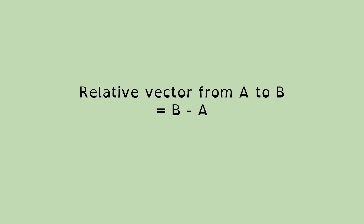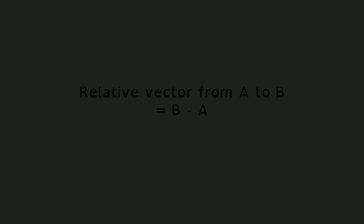To generalize that: the relative vector from A to B, where both are positions in the world, equals B minus A. And we'll be doing vector subtraction. Back we go to Unreal.